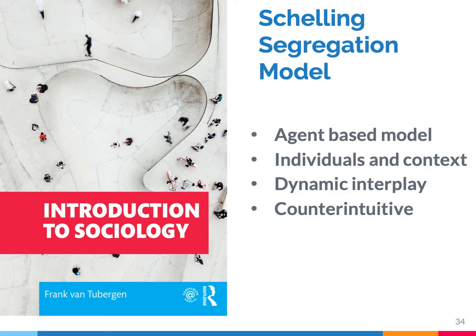In summary, the Schelling segregation model is a very famous example of agent-based modeling. Using these simulations, you can better understand how individuals interact with their social environment. People make decisions, their behavior changes the environment, and because they change the environment, other people are affected. This can lead to a dynamic interplay between individuals and their social context. The counter-intuitive finding from the Schelling model is that, because of this interplay, hypersegregation can emerge even when people have only mild in-group preferences. Thanks for listening.